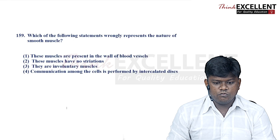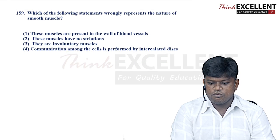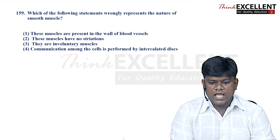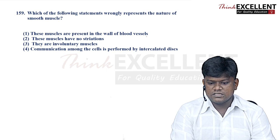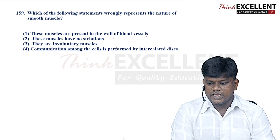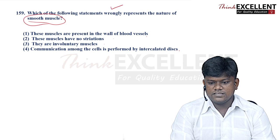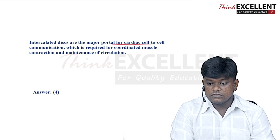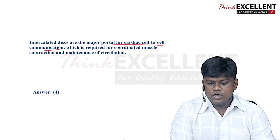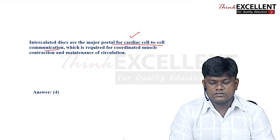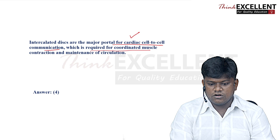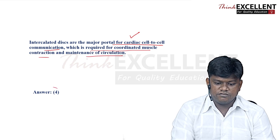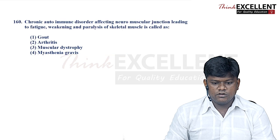So option 2 is the right answer for question 158. Question 159: which statement wrongly represents the nature of smooth muscles? Options include: present in walls of blood vessels, no striations, involuntary muscles, and communication among cells performed by intercalated discs. Intercalated discs are actually major portals for cardiac cell-to-cell communication, not smooth muscles. So option 4 is the right answer.